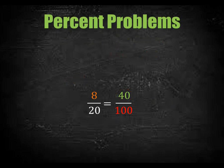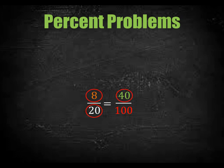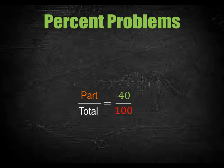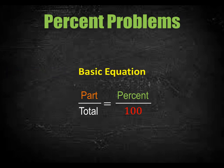Now let's start discussing percent problems. Whenever percent problems are solved, these four numbers are dealt with. One number is constant and never changes, but the remaining three numbers change problem to problem. 8 twentieths means 8 parts out of 20 total parts — so 8 is our part and 20 is total. After expressing this fraction out of 100, 40 was found, which was the percent. This gives us the general equation used to solve all kinds of percent problems.